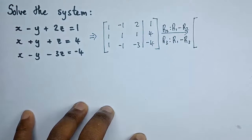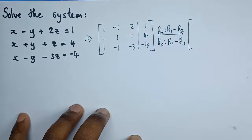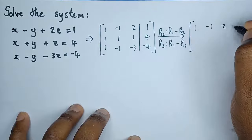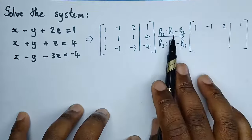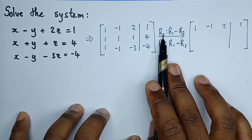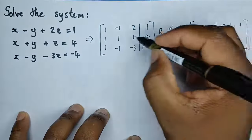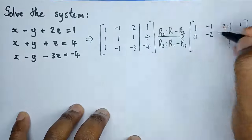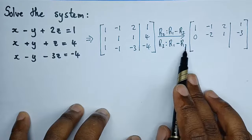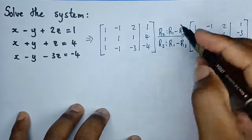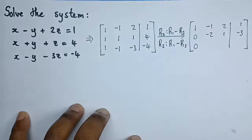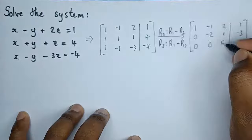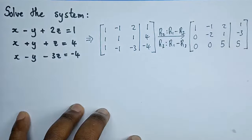Row 1 is untouched: 1, negative 1, 2, 1. Applying row 1 minus row 2: 1 minus 1 = 0; negative 1 minus 1 = negative 2; 2 minus 1 = 1; 1 minus 4 = negative 3. Applying row 1 minus row 3: 1 minus 1 = 0; negative 1 minus negative 1 = 0; 2 minus negative 3 = positive 5; 1 minus negative 4 = positive 5. We've now achieved the three zeros needed in the lower-left region.